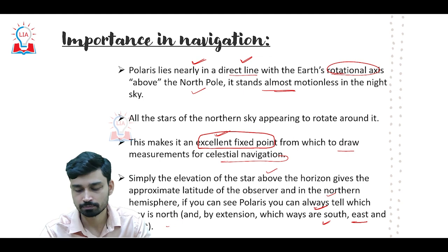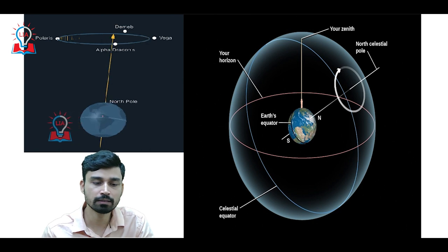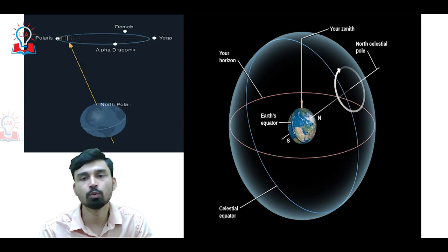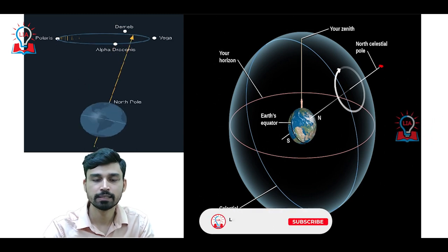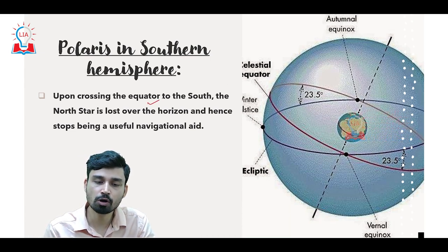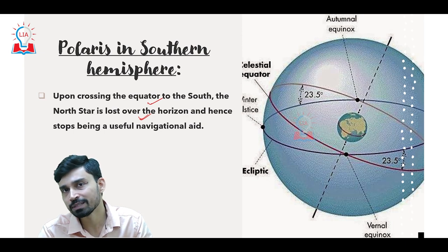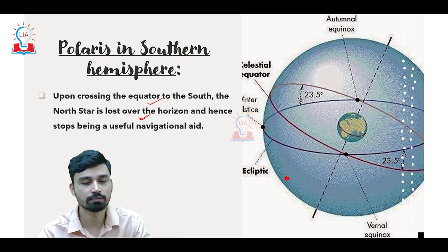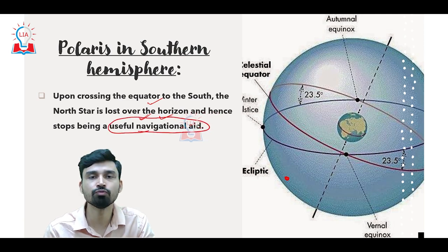Looking at this map and diagram, we can see that the earth is continuously rotating and its axis is currently oriented toward the pole star. Since the pole star is always oriented toward north, by extension one can also determine south, east, and west. However, once you cross the equator and move into the southern hemisphere, the north star is lost over the horizon and cannot be seen anymore, so it does not have any significant navigational purpose in the southern hemisphere.